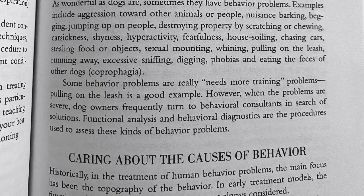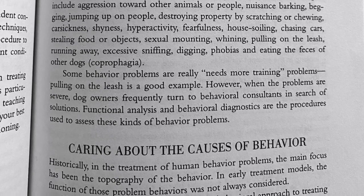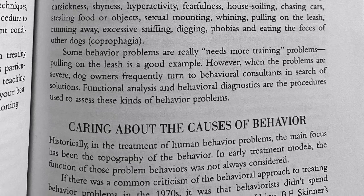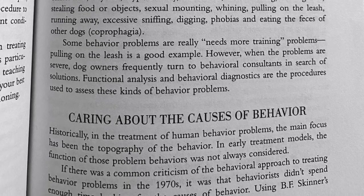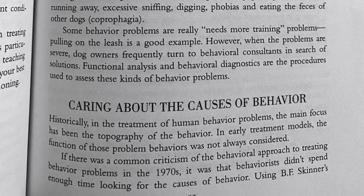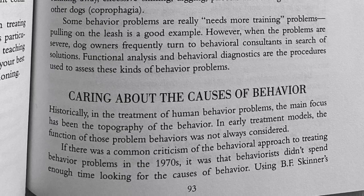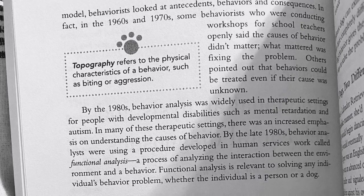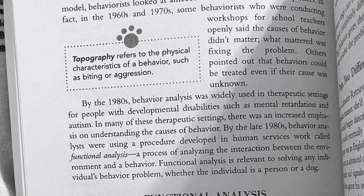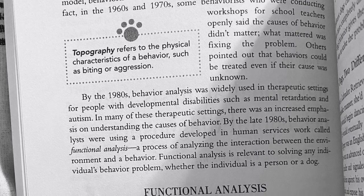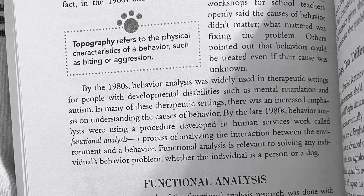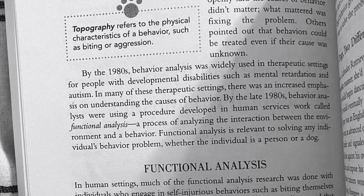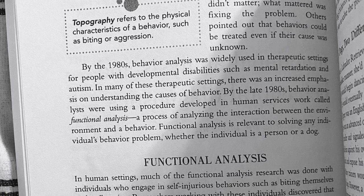Historically, the treatment of human behavior problems focused mainly on the topography of the behavior. In early treatment models, the function of those problem behaviors was not always considered. If there was a common criticism of the behavioral approach in the 1970s, it was that behaviorists didn't spend enough time looking for the causes of behavior. Using B.F. Skinner's model, behaviorists looked at antecedents, behaviors, and consequences. In fact, in the 1960s and 1970s, some behaviorists conducting workshops for school teachers openly said that causes of behavior didn't matter — what mattered was fixing the problem. Others pointed out that behaviors could be treated even if their cause was unknown. Topography refers to the physical characteristics of a behavior, such as biting or aggression.